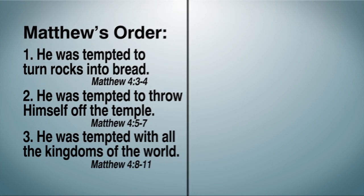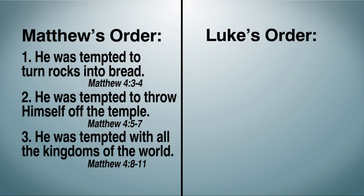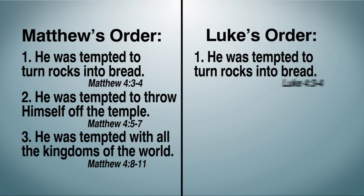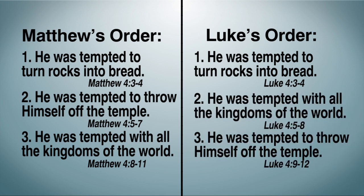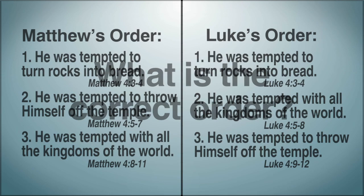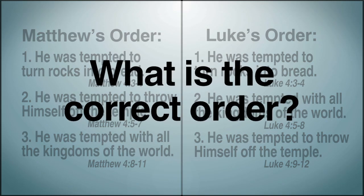However, Luke 4 seems to order this differently. He says Jesus was first tempted by turning rocks into bread, and then he was tempted with all the kingdoms of the world, and finally he was tempted to throw himself off the temple. So what is the correct order?